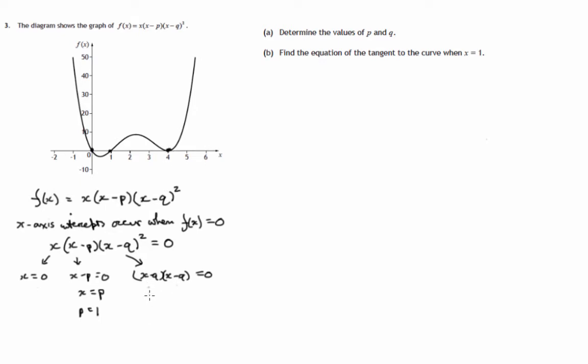And this one is what's called a repeated root. x minus Q equals 0. That's the same thing, x equals Q or x equals Q. There's really just one answer, x equals Q. And Q in this case would be 4.